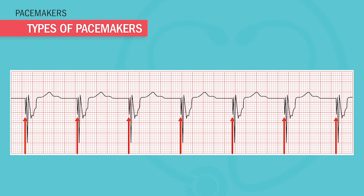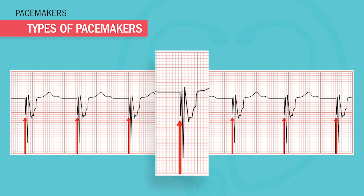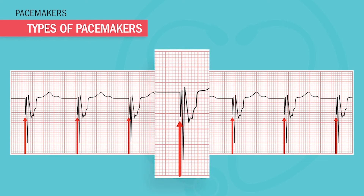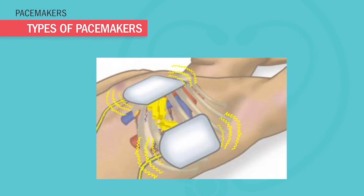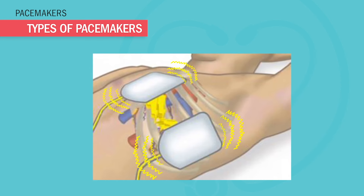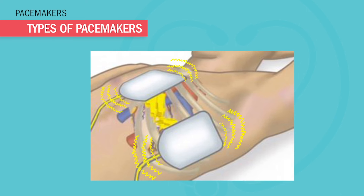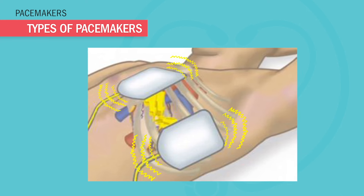Now let's review the different types of pacemakers. When you're looking at an ECG or EKG, you'll see really thick, dark, ugly spike marks — like unplugged eyebrow-looking spikes. This is normal for pacemaker patients. Pacemakers are either external or internal; the external ones are only temporary and most commonly used in emergency or acute situations.